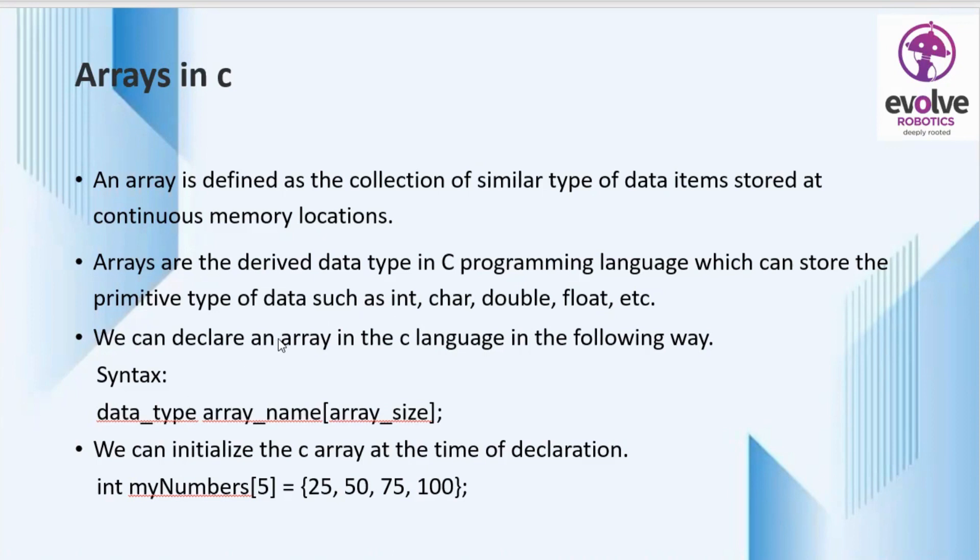Then how to create an array? How to declare an array in C language in the following way. We can see the syntax. First we have to define the data type and the name of array followed by square brackets. Then we have to specify the size of array inside the square bracket.